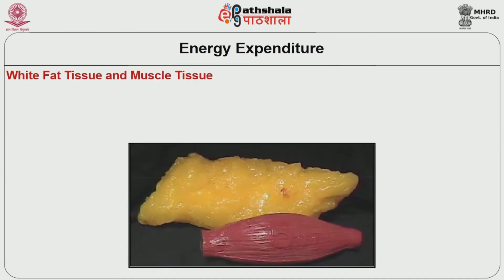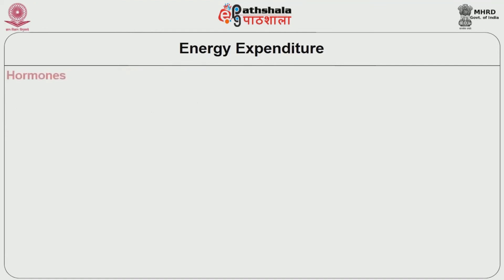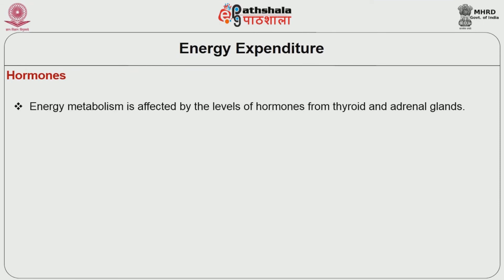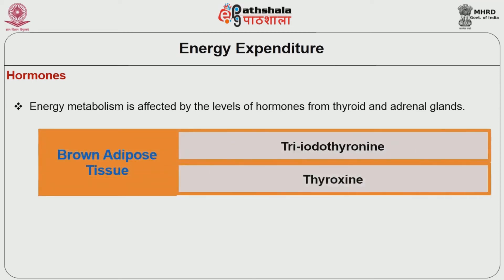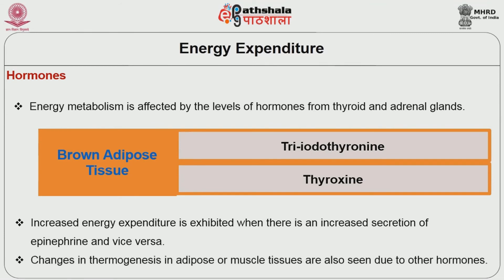Both white fat tissue and muscle tissue experience thermogenesis with no production of ATP molecules when a food rich in dietary fat is consumed. Energy metabolism is affected by the levels of hormones from the thyroid and adrenal glands. Brown adipose tissues are stimulated by triiodothyronine and thyroxine secreted by the thyroid gland. Increased energy expenditure is exhibited when there is an increased secretion of epinephrine and vice versa. Changes in thermogenesis in adipose or muscle tissues are also seen due to other hormones.